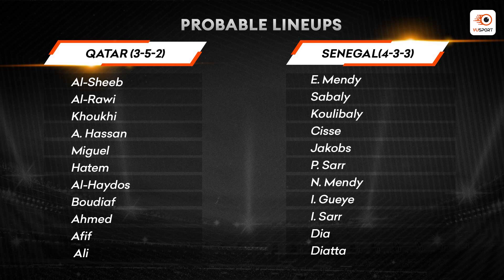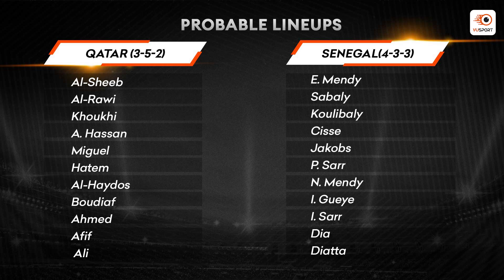Qatar should line up in a 3-5-2. Goalkeeper rehenge Al-Sheeb. Back three mein rehenge Al-Rawi, Khoukhi, and Hassan. Midfield five mein wing backs rehenge Miguel aur Ahmad, midfield three would be Hatim, Al-Haydos, and Boudiaf. Front two mein rehenge Akram Afif aur Ali.